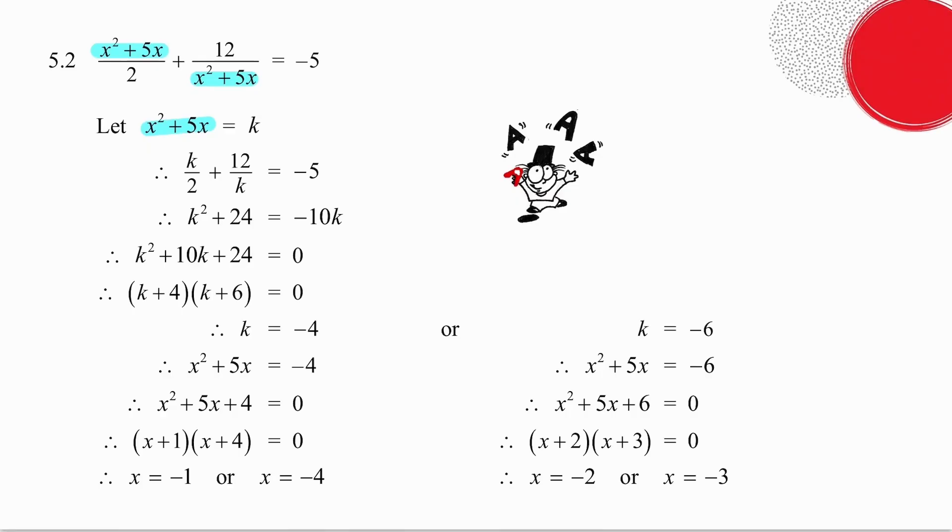So my equation becomes k over 2 plus 12 over k equals minus 5. And now what I can do is multiply by my common denominator which is 2k. So I multiply every term by 2k and I get that. Write it in standard form, factorize the trinomial and I get two values for k.